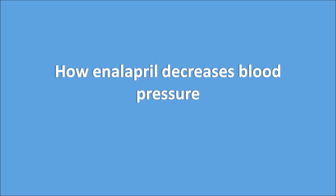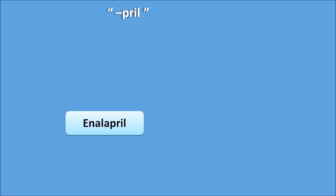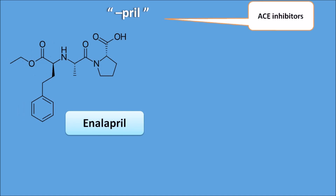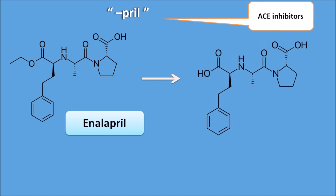Enalapril has the suffix '-pril', which indicates it is an ACE inhibitor. Enalapril has a structure that can be metabolized in vivo into an active metabolite called enalaprilat.